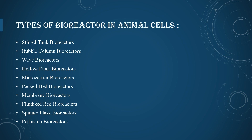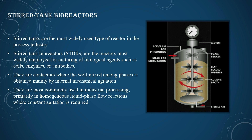The ten types are: stirred tank bioreactor, bubble column bioreactor, wave bioreactor, hollow fiber bioreactor, microcarrier bioreactor, packed bed bioreactor, membrane bioreactor, fluidized bed bioreactor, spinner flask bioreactor, and perfusion bioreactor. First, the stirred tank bioreactor — this is the most widely used type of reactor in the process industry, employed for cultivating biological agents such as cells, enzymes, and antibodies.